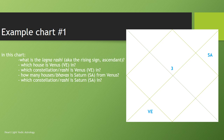The next question is: which house is Venus — symbolized by VE — in, and what is the constellation or rashi that Venus is in? The next question is: how many houses or bhavas is Saturn — symbolized by SA — from Venus, and which constellation or rashi is Saturn in? So you've got five questions to answer from this chart to double-check that you got the concepts I taught on the first slide.